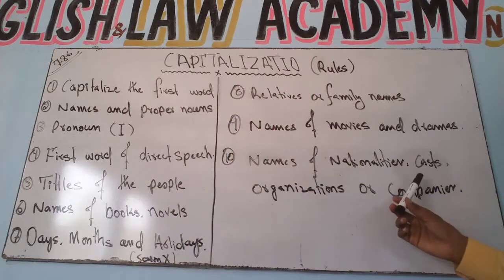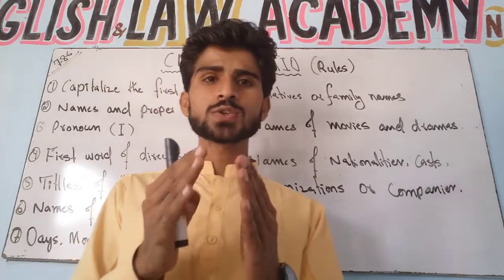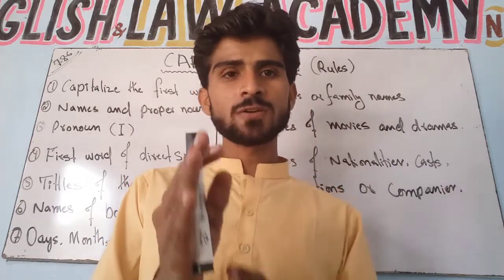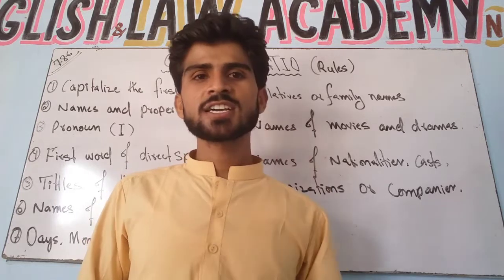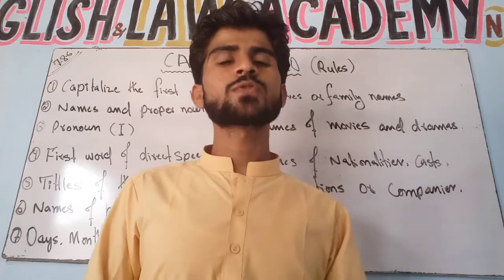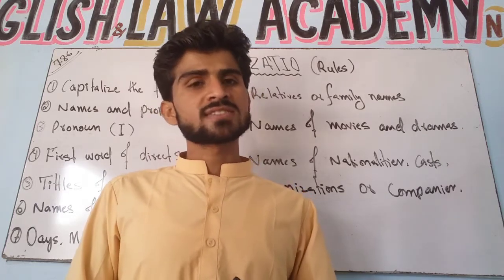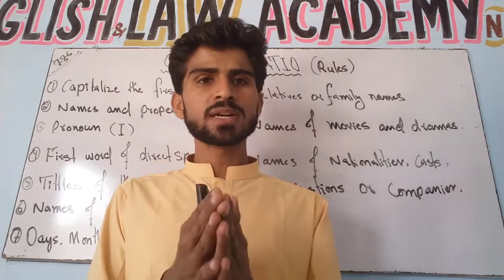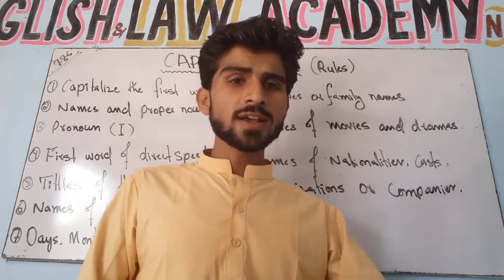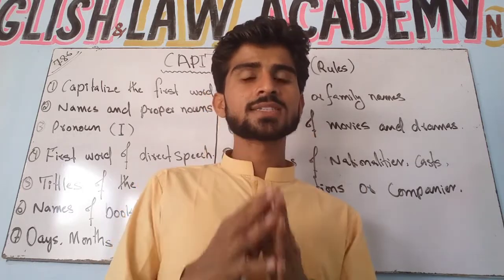Rule ten: names of nationalities, castes, organizations, or companies. Whenever you write nationalities like Pakistani, Indian, or British, capitalize the first letter. For companies like Apple or Oppo, the first letter must be capital. For organizations like the World Health Organization, you must write the first letter of the organization's name in capital form.